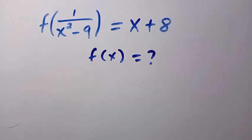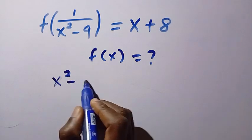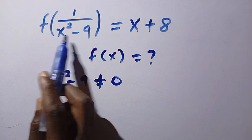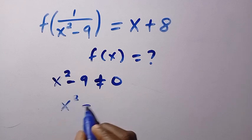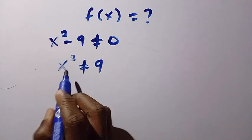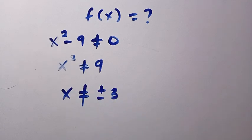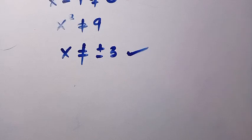Before solving for f of x, we need to understand that x squared minus 9 must not equal 0, so the denominator must not be 0. This gives x squared not equal to 9, and taking the square root of both sides, x must not equal plus or minus 3. If you plug in positive 3 or negative 3, the function is undefined.